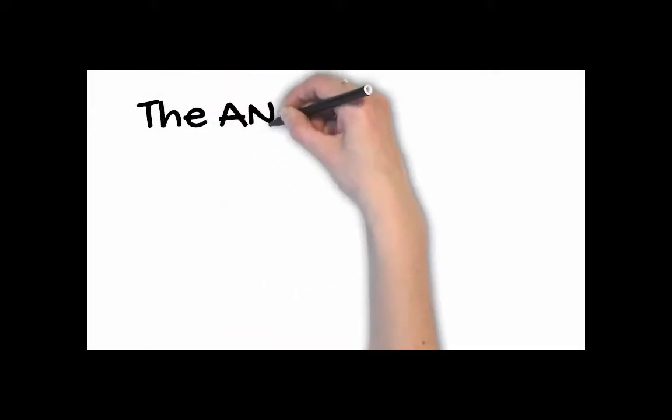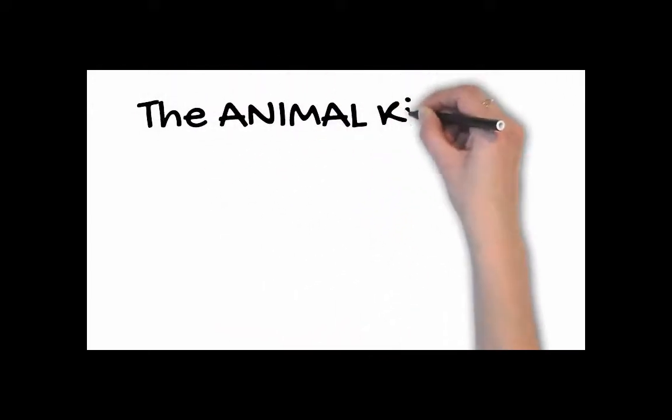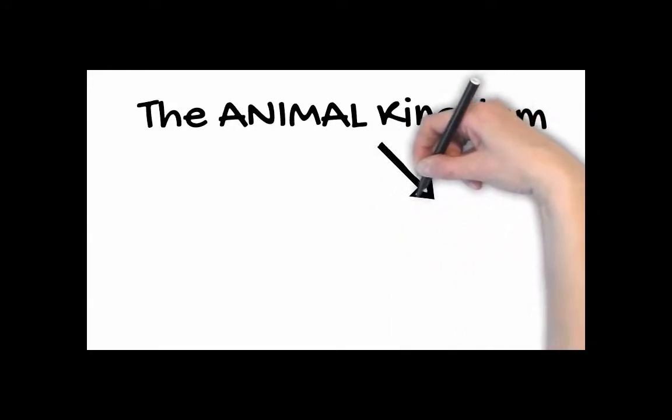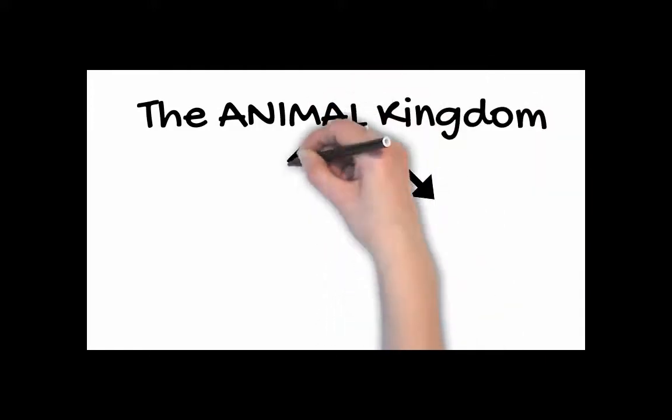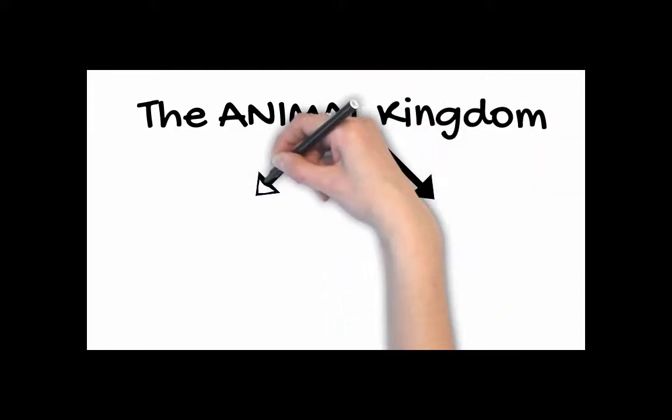So today we are going to look in more detail at the animal kingdom. Now the animal kingdom is one of the five different kingdoms and it can be split into two main categories: vertebrates and invertebrates.